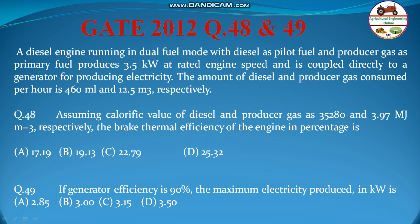Question 49: If generator efficiency is 90%, the maximum electricity produced in kW is: A) 2.85, B) 3.0, C) 3.15, and D) 3.5. So, let us quickly go to the solution part. It is a very simple problem.